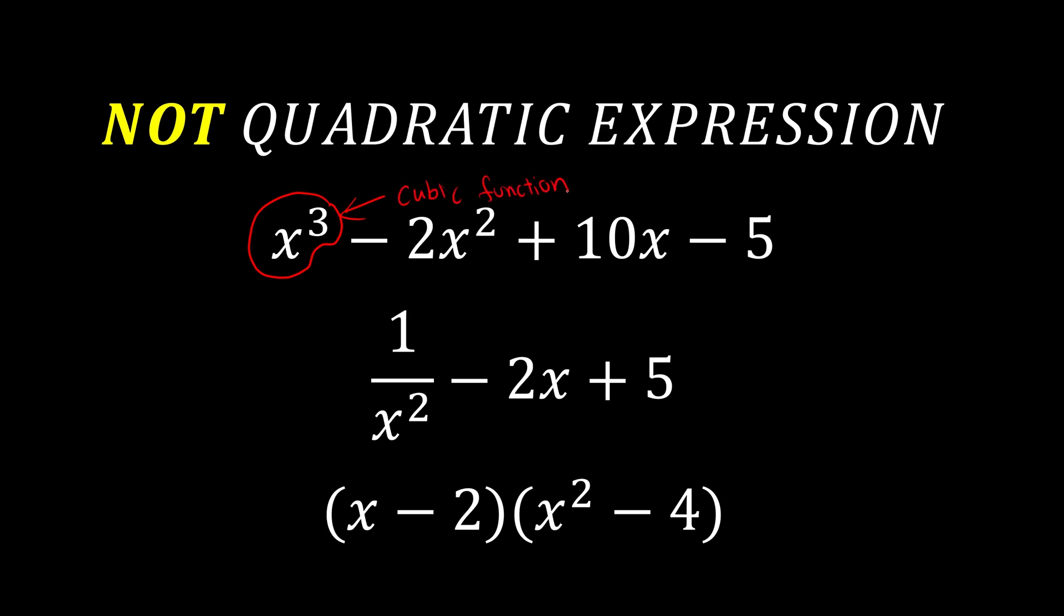The second example, when we see a fraction, we multiply everything by the highest power of denominators. This gives us 1 minus 2x cubed plus 5x squared. Where we have power of 3, it's not a quadratic anymore. This is a cubic function as well.